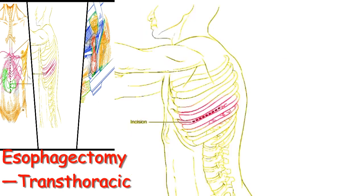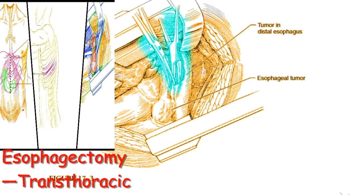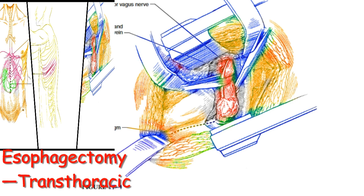A right thoracotomy is recommended for a mid-thoracic or upper-thoracic cancer; a left thoracotomy is recommended for cancer in the lower one-third of the thorax or in the distal esophagus. The stomach is completely mobilized as previously described for transhiatal esophagectomy. A lateral thoracotomy is performed in the sixth to seventh intercostal space and the lung is retracted. The azygous vein should be identified and suture ligated to better reduce the risk of postoperative hemorrhage.